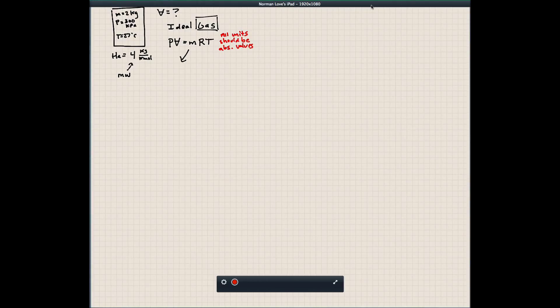Let me go ahead and plug in these values. Pressure - remember we're going to use 300 kilopascals, 300,000 pascals, times volume, is equal to the mass, 2 kilograms, times the ideal gas constant. I'm going to just leave it as R, and we'll solve that separately, times temperature. Again, we need to use absolute units. So we're going to do 27 plus 273.